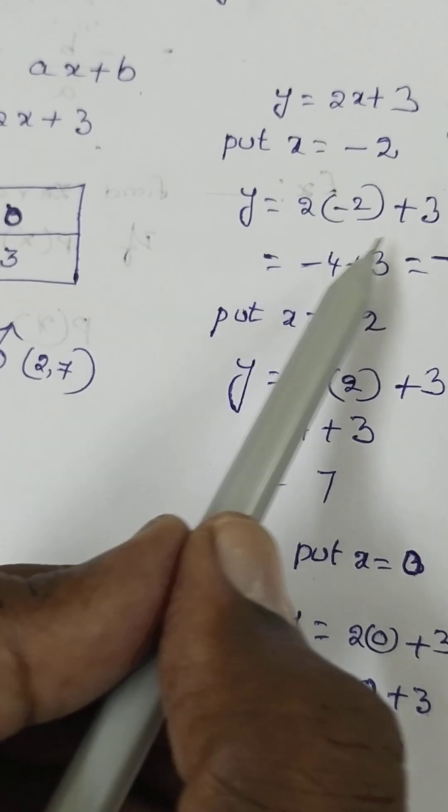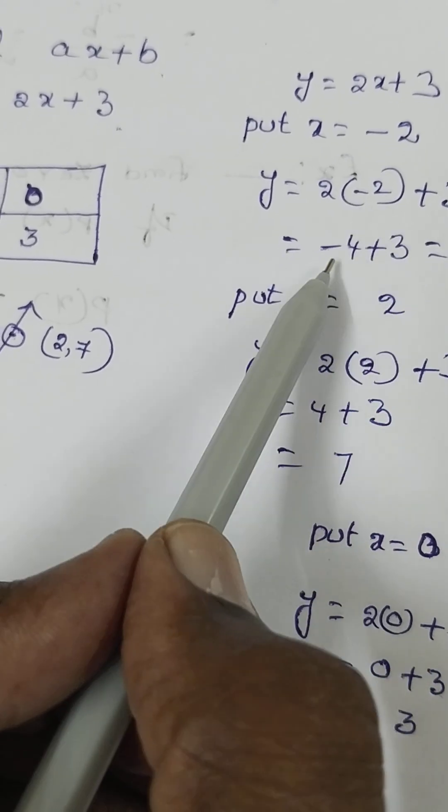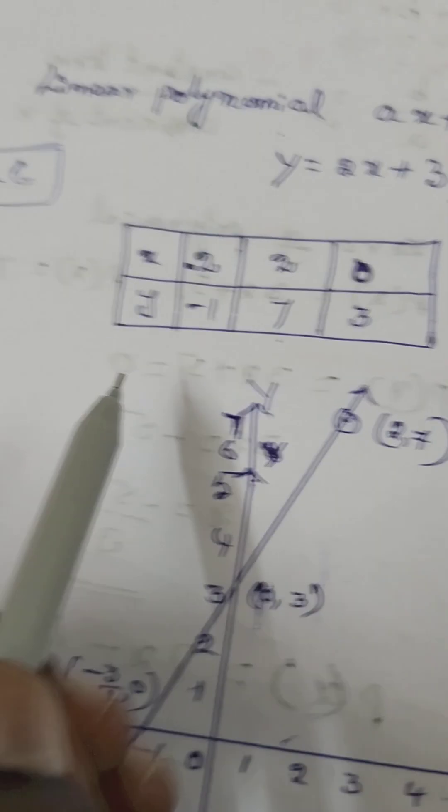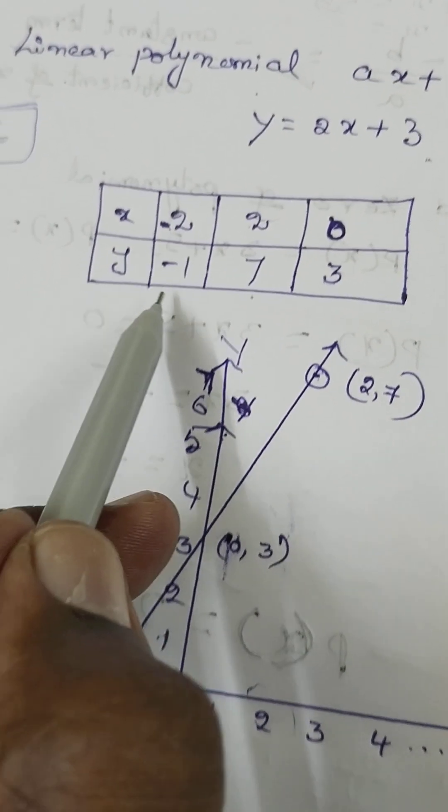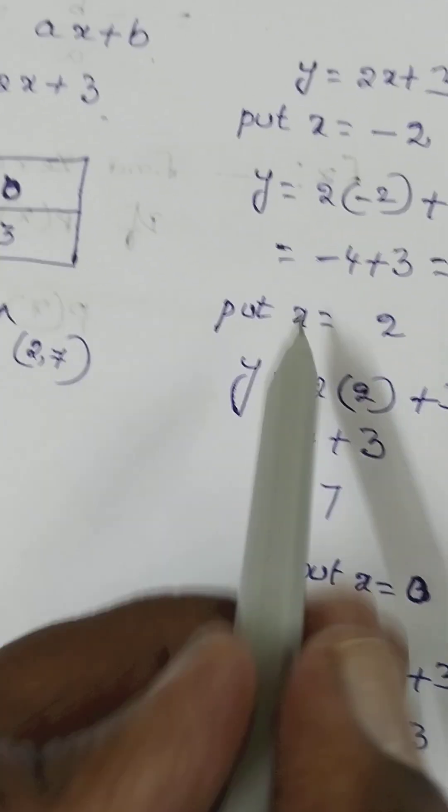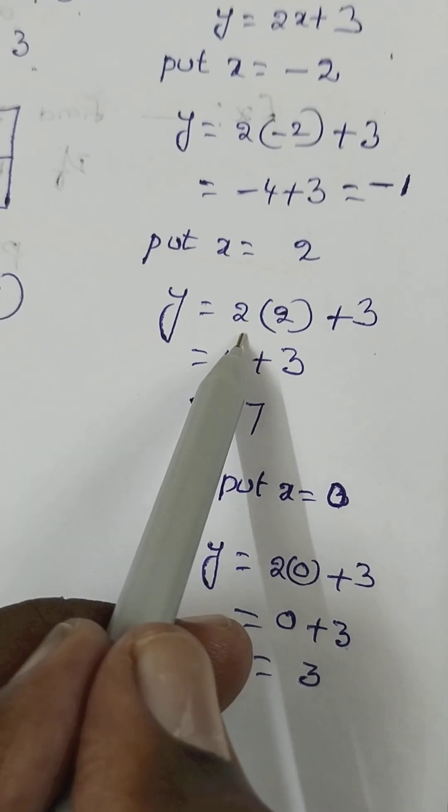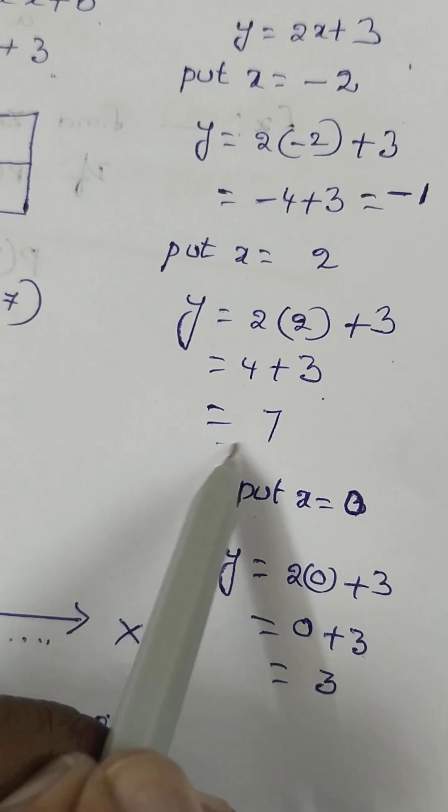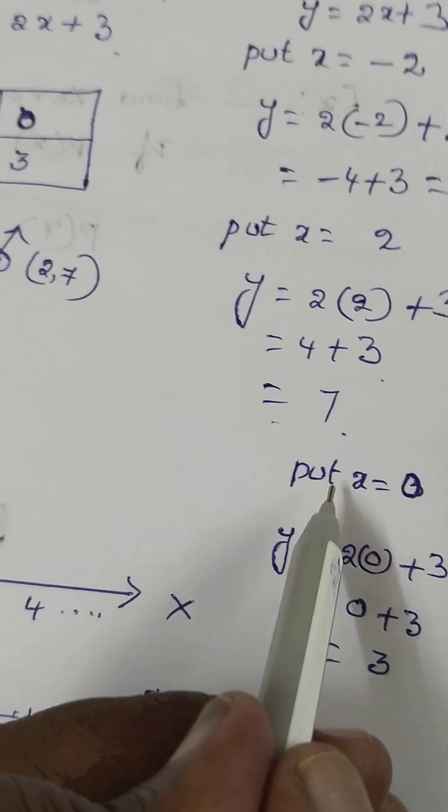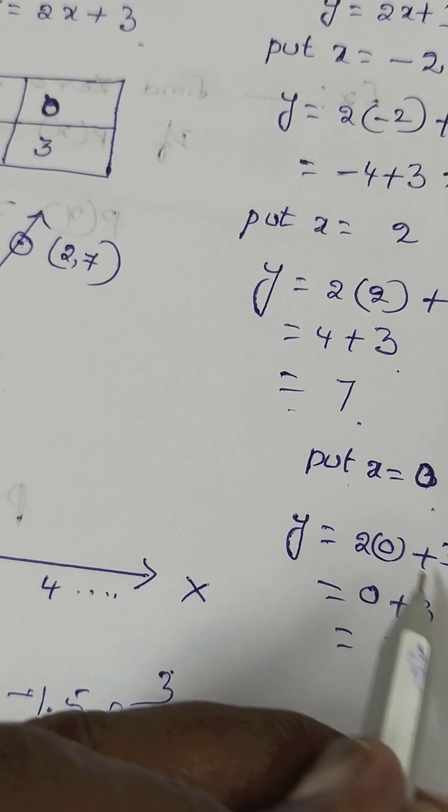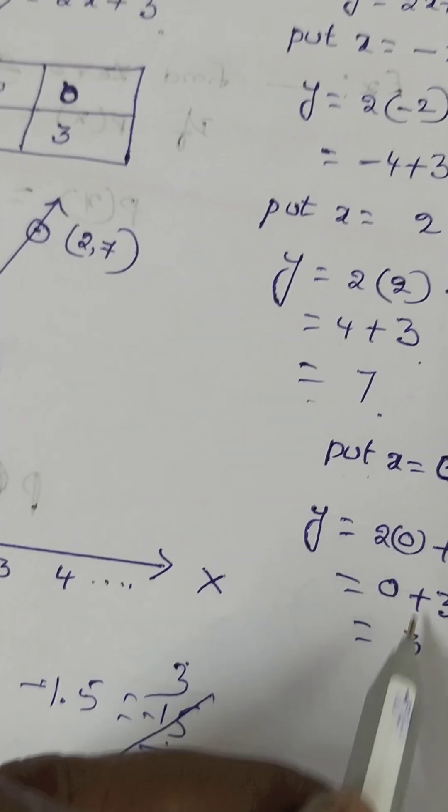Creating a table of values: when x is minus 2, 2 times minus 2 plus 3 equals minus 1. When x is 2, 2 times 2 plus 3 equals 7. When x is 0, y is equal to 2 times 0 plus 3, which is 3.